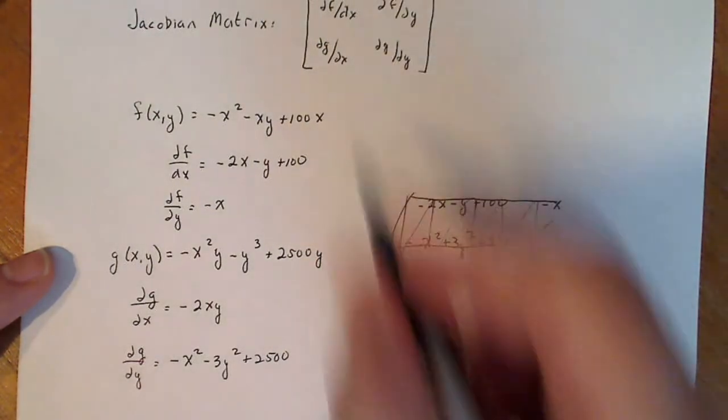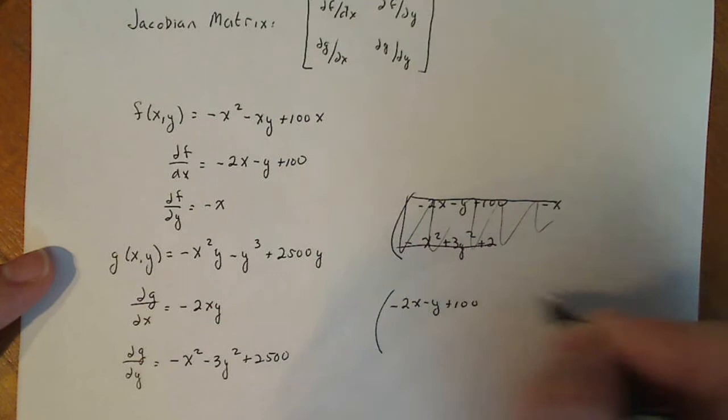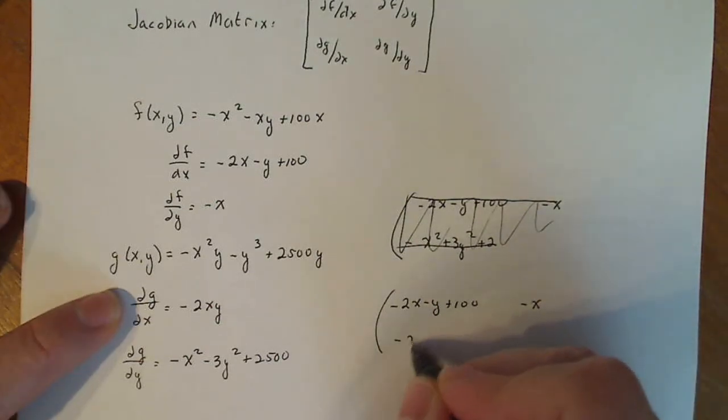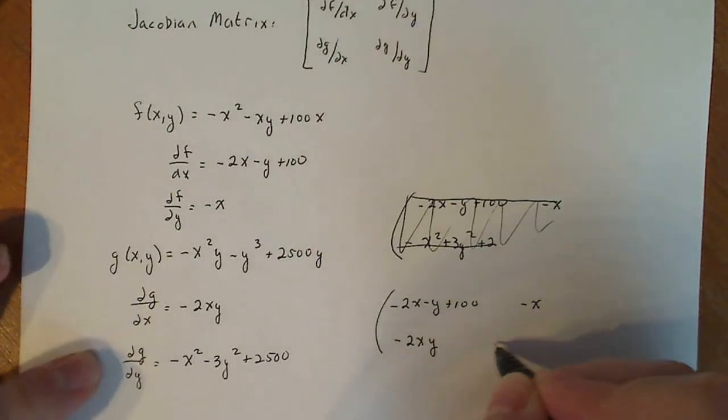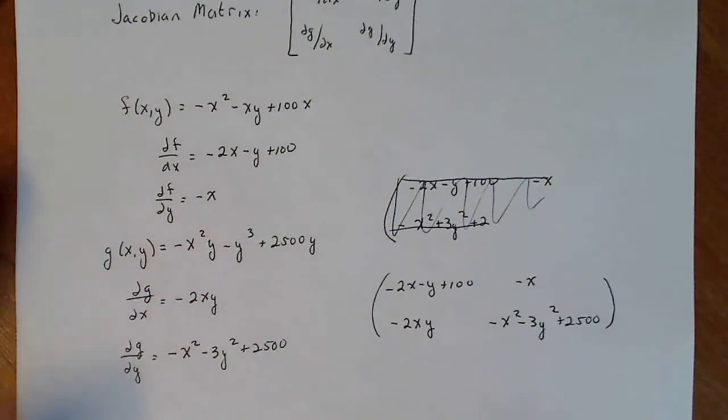So this is a partial of F with respect to Y, that one's there. I was looking at the wrong one here. So this is minus 2XY, and this is minus X squared minus 3Y squared plus 2,500. There we go. Now that's our Jacobian.